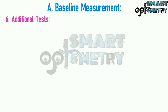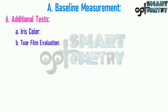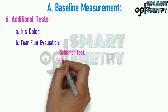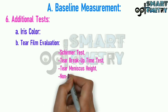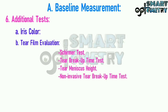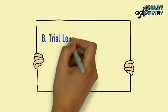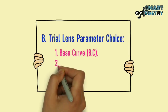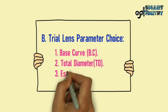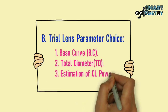6) Additional tests: A) Iris color, B) Tear film evaluation, which is generally done by Schirmer's test, tear breakup time test, tear meniscus height, and non-invasive tear breakup time test. This concludes the baseline measurements. Now we move to trial lens parameter choice for soft spherical contact lens fitting, covering: 1) base curve, 2) total diameter, and 3) estimation of contact lens power.